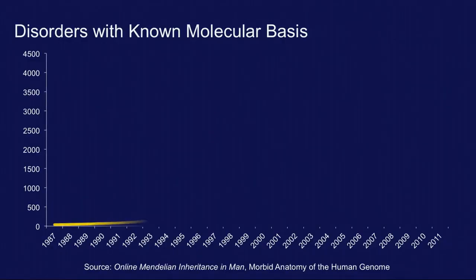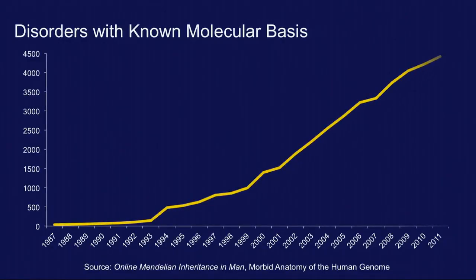If you ask how many diseases do we now know the exact molecular basis for, it turns out it's about 4,000 — which is pretty amazing, because most of those molecular discoveries have just happened in the last little while. But how many of those 4,000 diseases now have treatments available? Only about 250. So we have this huge challenge, this huge gap.